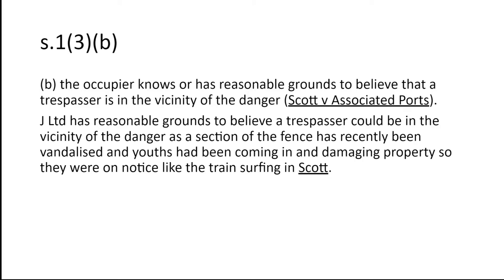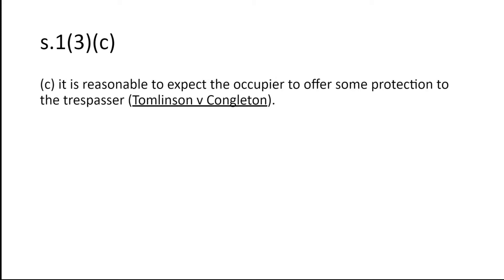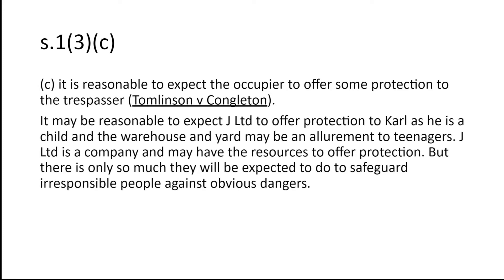Element (b): the occupier knows or has reasonable grounds to believe that a trespasser is in the vicinity of the danger. Here, J Limited has reasonable grounds to believe a trespasser could be in the vicinity as a section of the fence had recently been vandalised and youths had come in and damaged property — they were on notice, like the train surfing in Scot v Associated Ports. If you felt they weren't aware, you could use the case of Swain. Element (c): is it reasonable to expect the occupier to offer some protection to the trespasser? This is Tomlinson v Congleton Council, and there are arguments both ways — it may be reasonable because Carl is a child and the yard may be an allurement, but there's only so much expected to safeguard irresponsible people against obvious dangers.